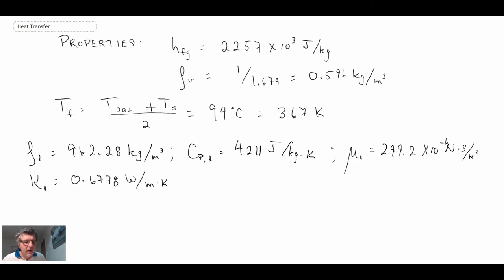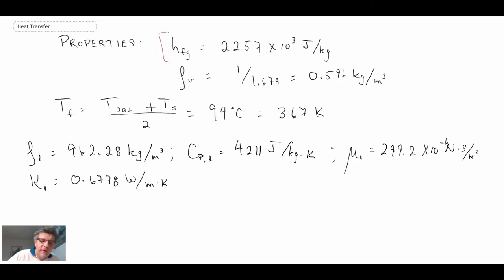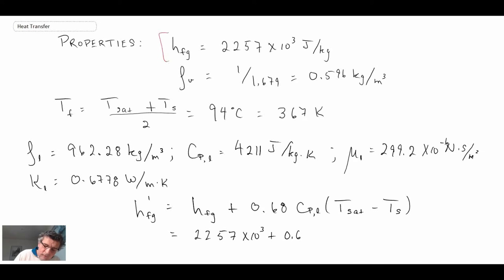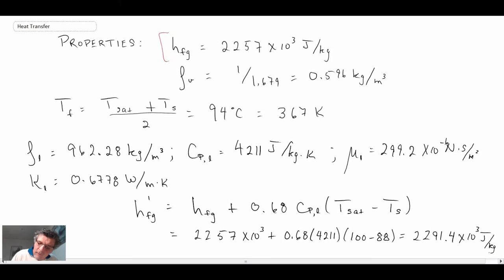Those are the properties at the film temperature. Now in our correlation we're going to use the modified latent heat of vaporization rather than the standard one, so let's evaluate that. We obtain the modified latent heat of vaporization, and we will use that in our correlations going forward.